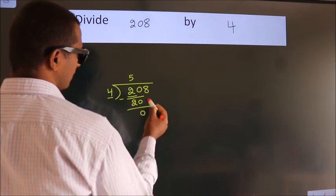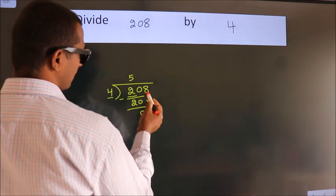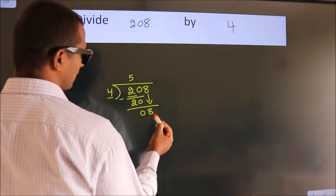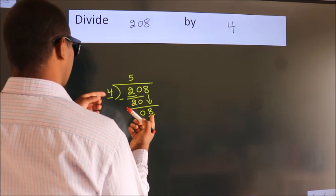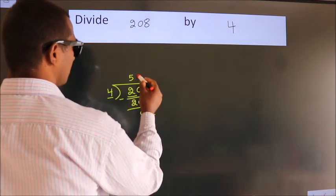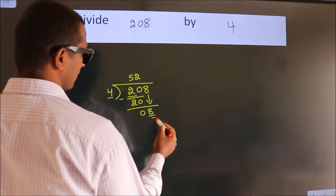After this, bring down the beside number. So 8 down. So 8. When do we get 8? In the 4 table.